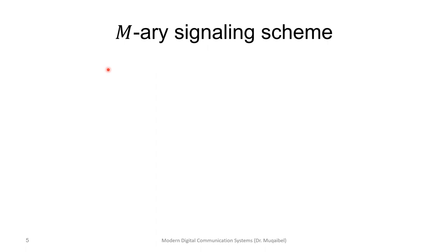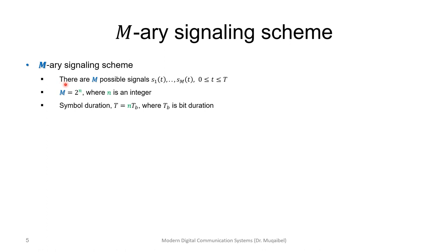We can also classify communication as binary or M-ary. In an M-ary signaling scheme, there are M possible signals S1 up to SM, used over symbol duration T. The number of symbols is 2 raised to power n, where n is the number of bits per symbol — so M equals 2, 4, 8, 16, and so on. If binary, symbol and bit are the same; in general M-ary, the symbol duration T equals n times Tb.